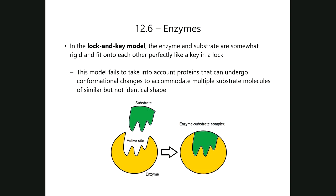Over several centuries of studying enzymes, several models have been proposed to explain how enzymes carry out transformations. The lock-and-key model describes the enzyme and substrate as both somewhat rigid, fitting perfectly into each other like a key in a lock. This is mostly true for absolute specificity — when the enzyme recognizes and acts upon one and only one substrate. Just as only one key will fit into a specific lock, this model explains enzymes with a single substrate.